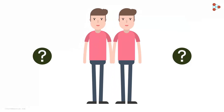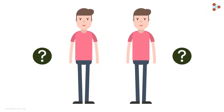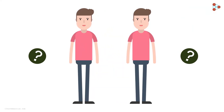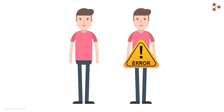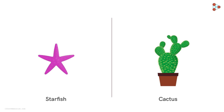Have you ever thought of cloning yourself or regenerating some of your organs? But being humans, we can't just divide into two to make an extra copy of ourselves or regenerate any of our parts. If we were some other type of organism, let's say a starfish or a cactus, then cloning or regenerating would have been possible.